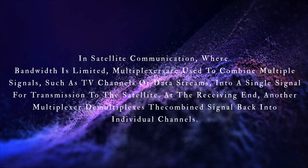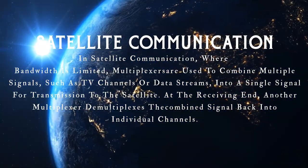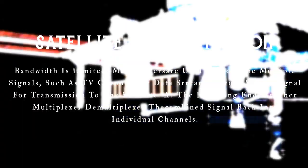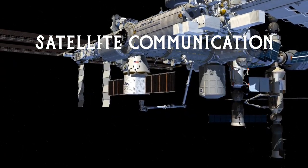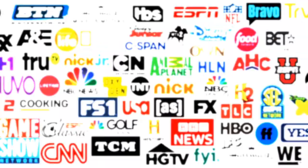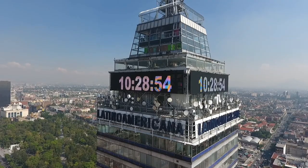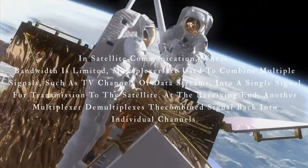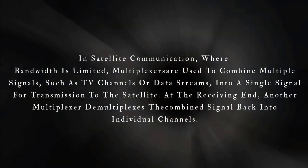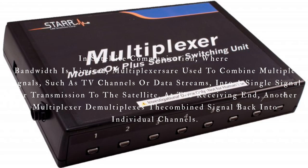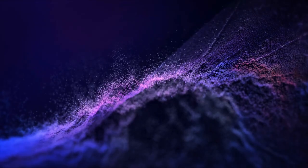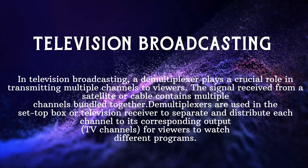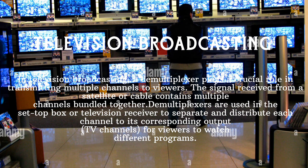In satellite communication systems, where bandwidth is limited, multiplexers are used to combine multiple signals — such as TV channels or data streams — into a single signal for transmission to the satellite. At the receiving end, a demultiplexer separates the combined signal back into individual channels.